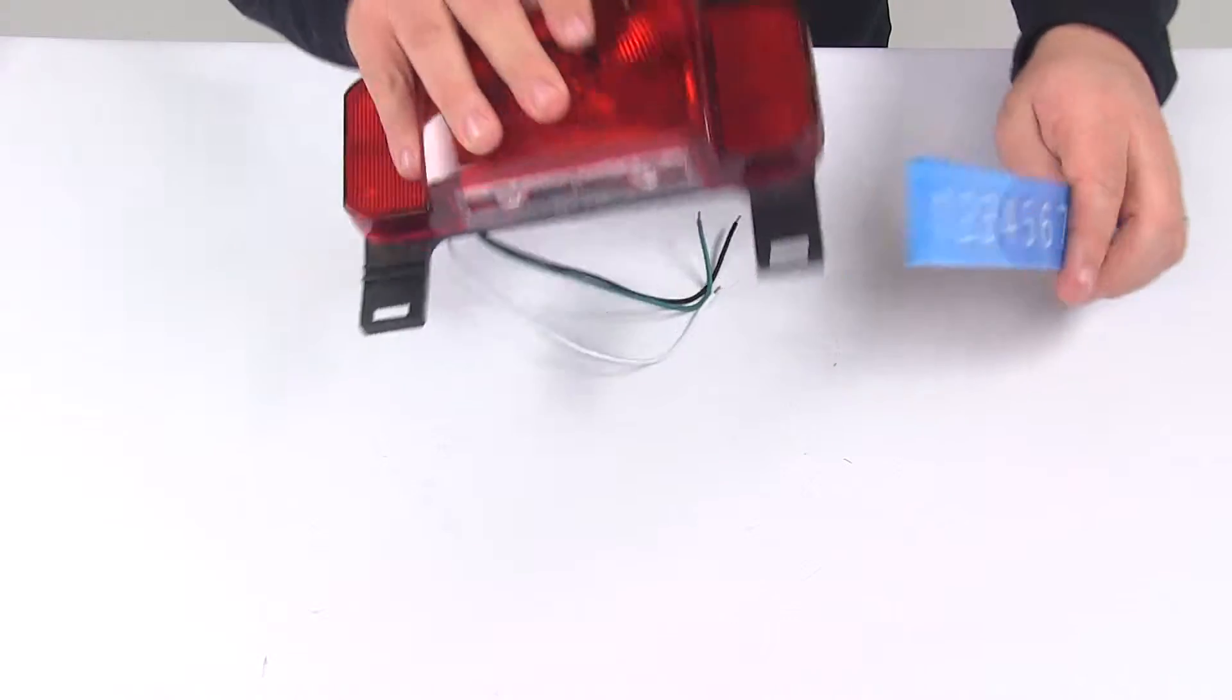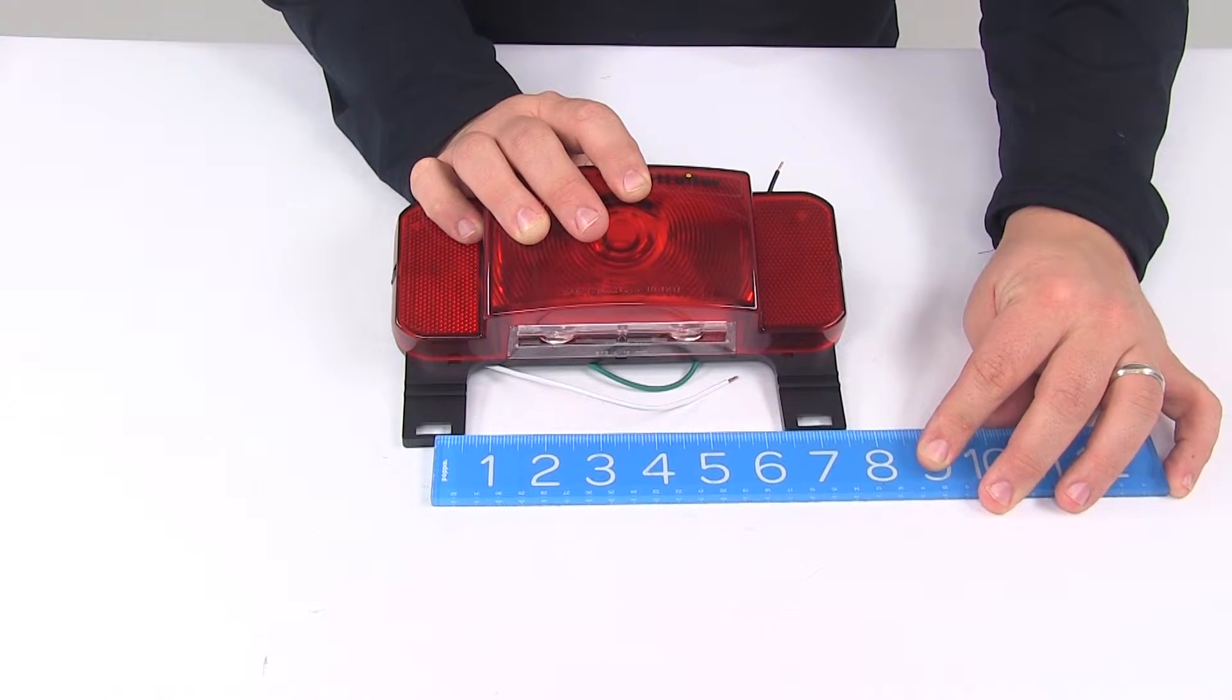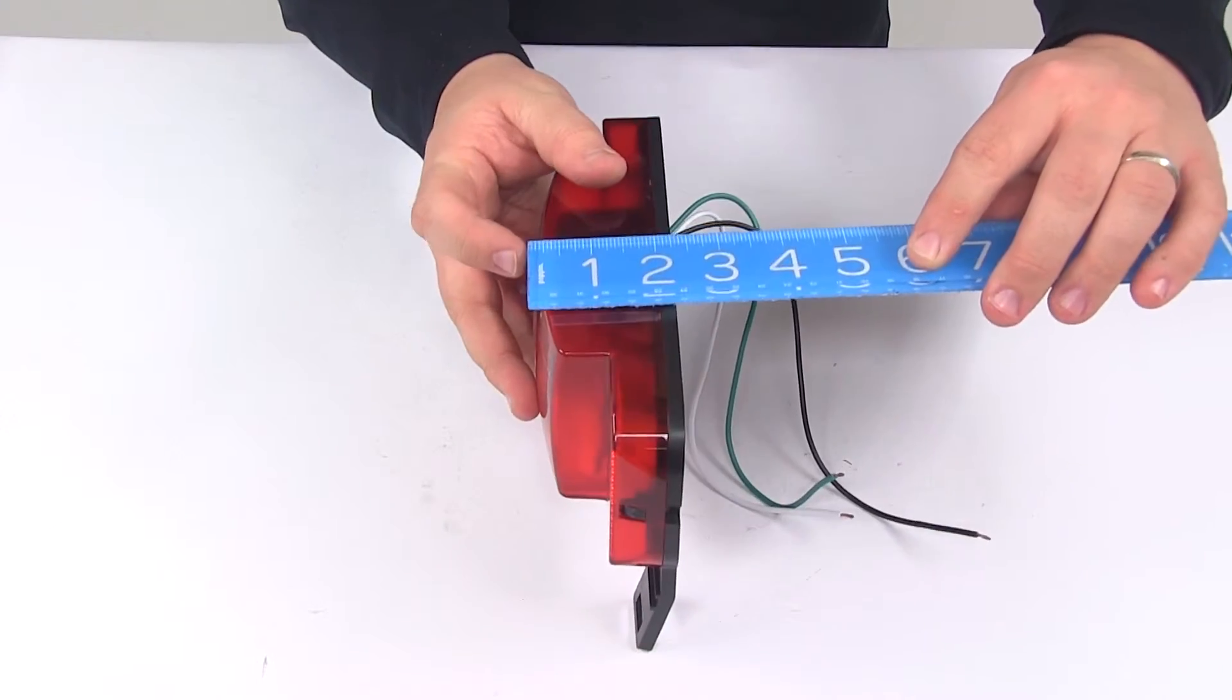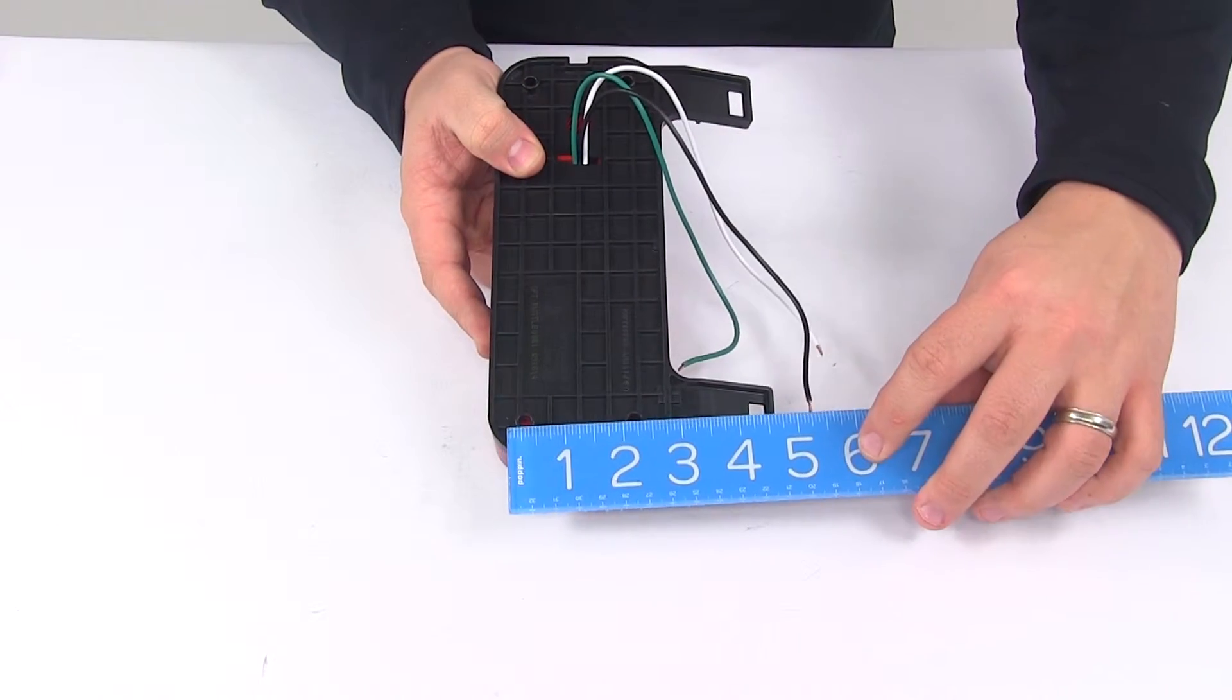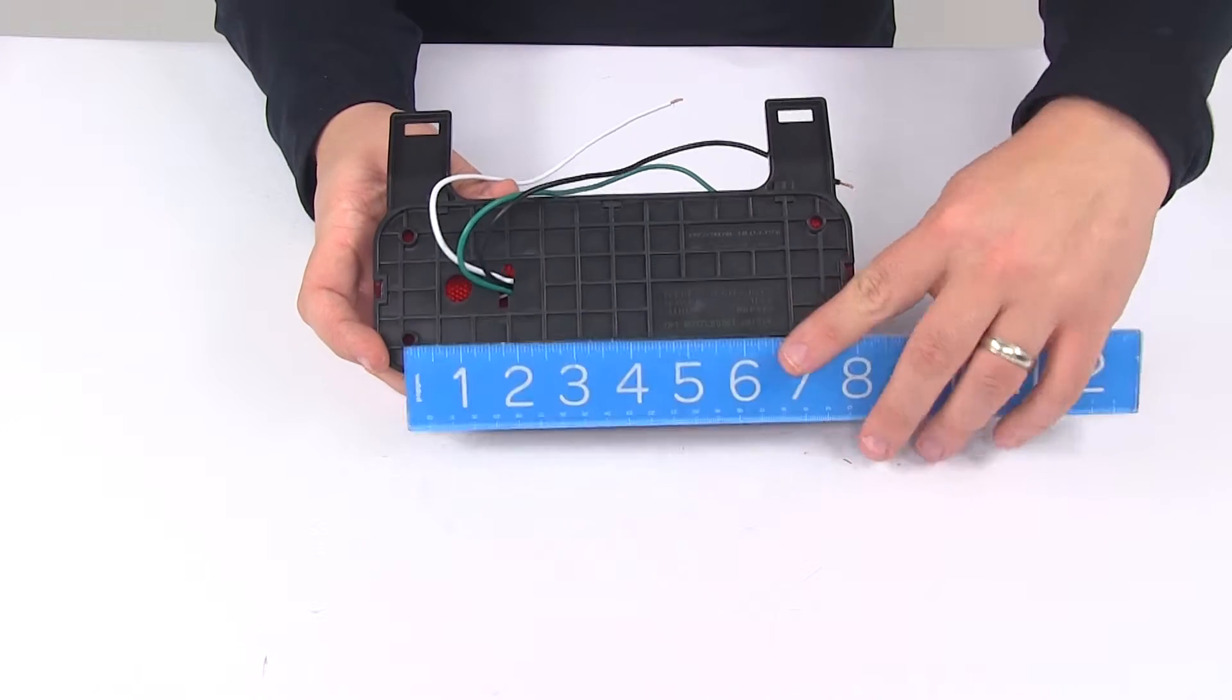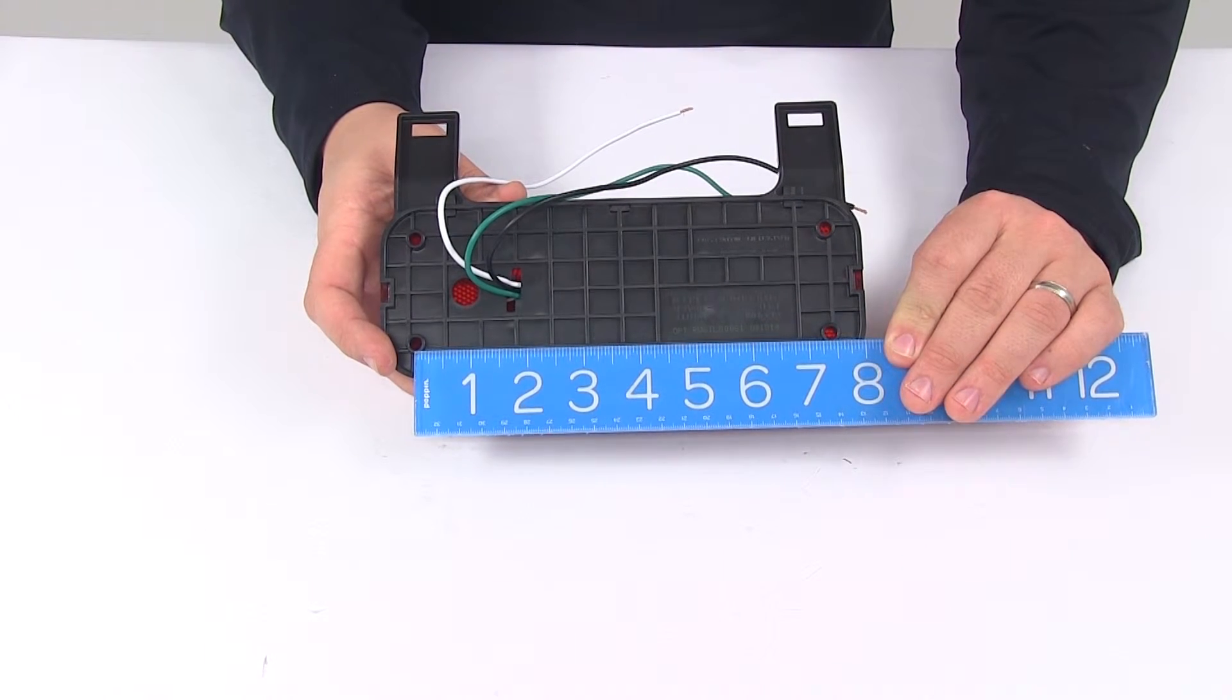The distance between the holes for the license plate mount is seven inches. The overall depth, front to back, is about two and one quarter inches. The mount hole separation in this direction is one and seven eighths inches, and in this direction, center on center, is seven and three eighths inches.